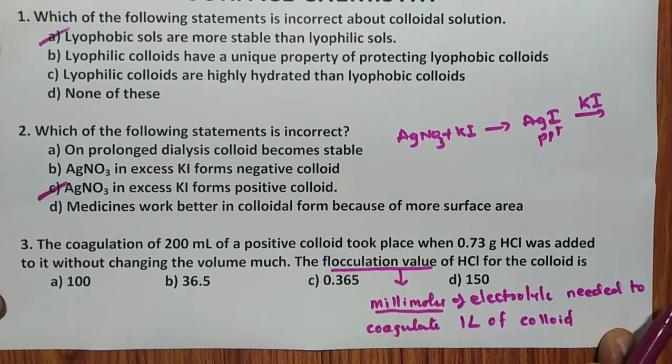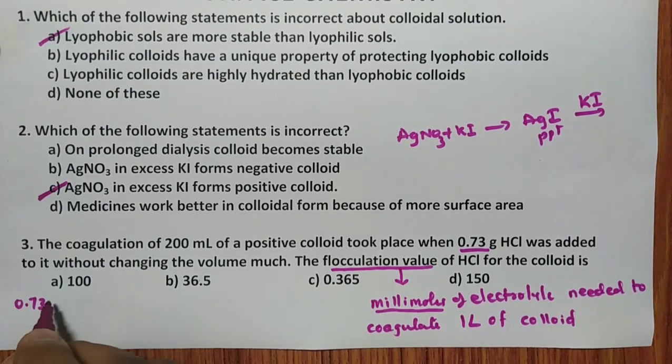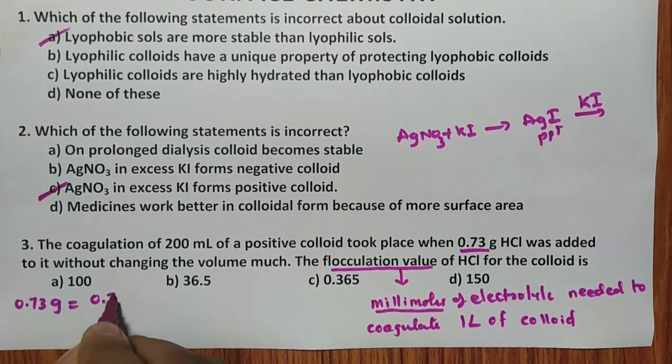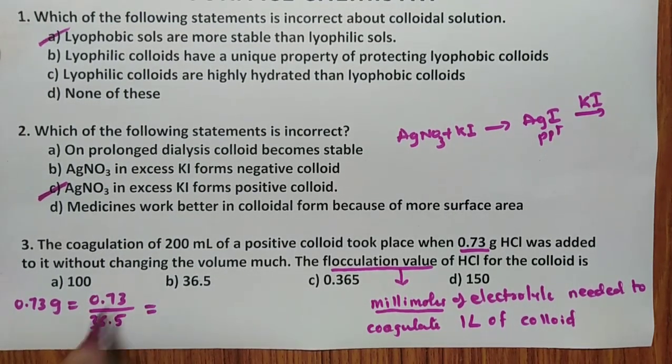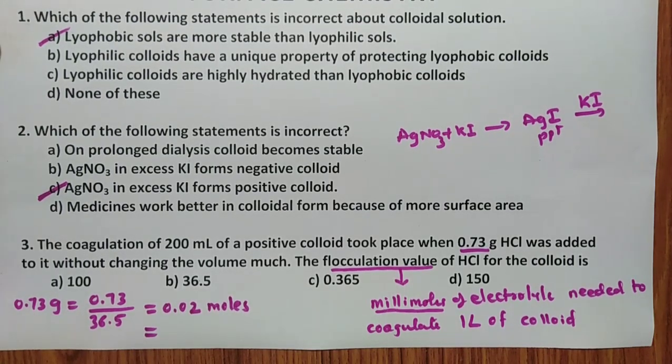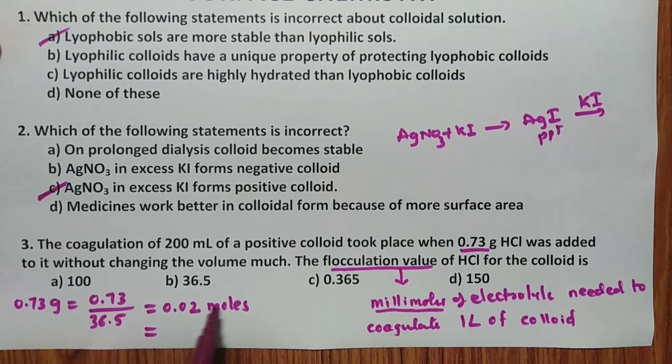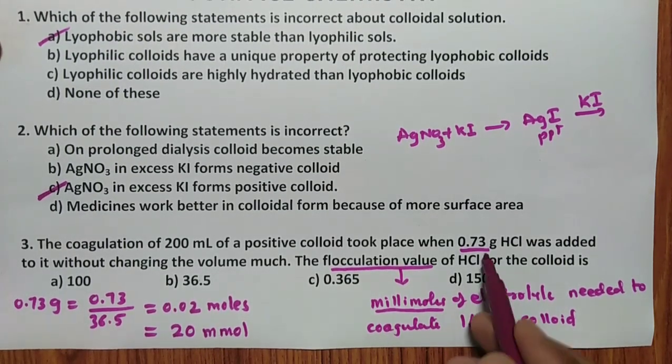In this particular case, whatever the gram given, convert it into millimoles. So 0.73 gram HCl, mass divided by molecular mass is mole. Molecular mass of HCl is 36.5. So the answer is 0.02 moles. But we need millimoles. So 1 mole equals 10 to the power 3 millimoles. If I do 10 to the power 3, I will get 20 millimoles.